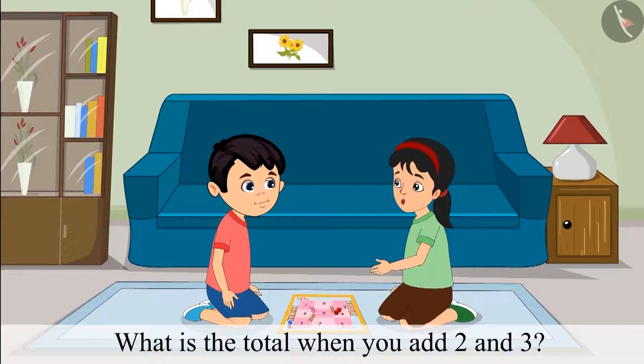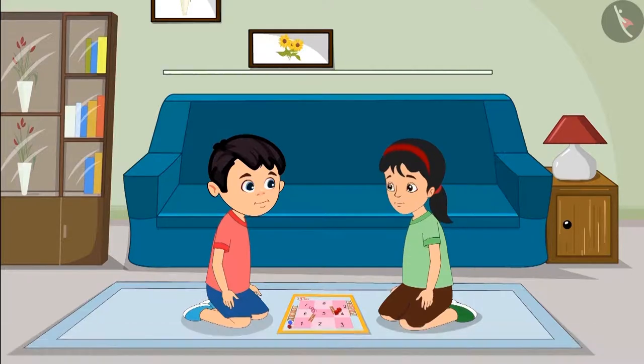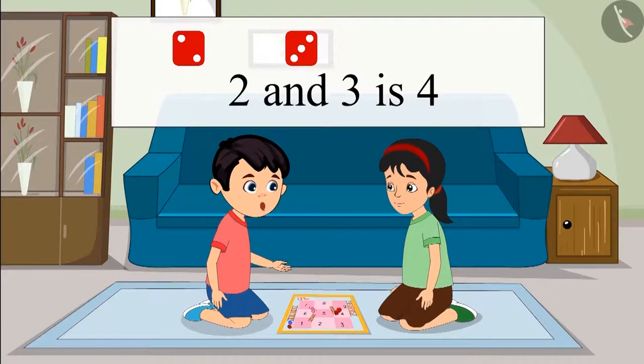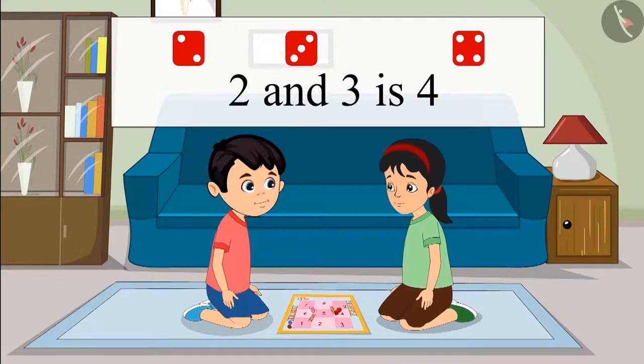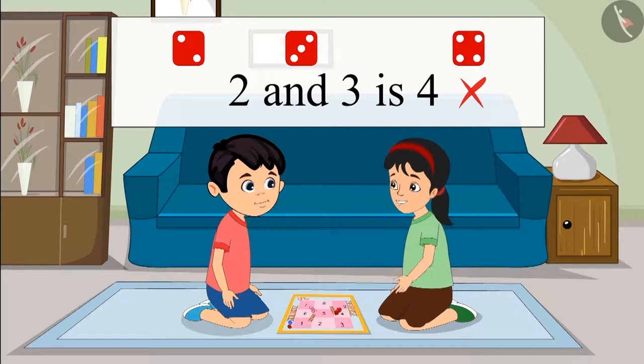Chotu, what is the total when you add 2 and 3? When we add 2 and 3, we get 4. This is incorrect, Chotu. Think again and explain how did you count.